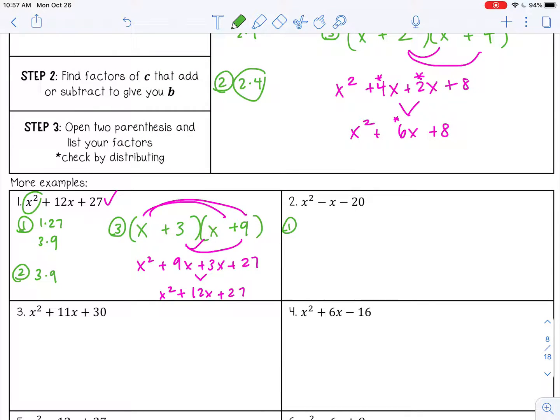Next, we have 20. So the factors of 20 are 1 and 20, 2 and 10, 3 won't go into it, 4 and 5. So notice I'm not really worried about the signs right now. I'm just worried about the number 20.